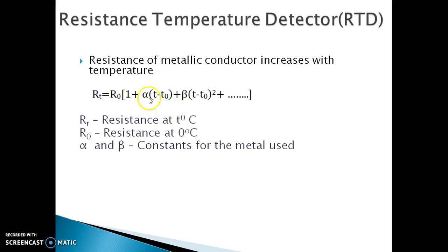The higher order constants of this equation can be neglected because the values are smaller than alpha. Hence, the equation becomes RT equals to R0 into 1 plus alpha into delta T.